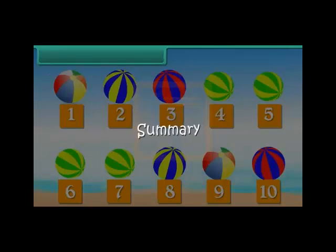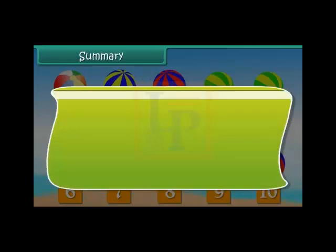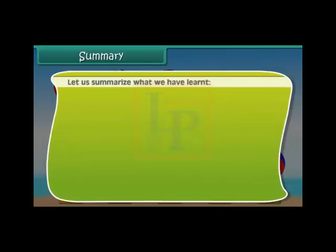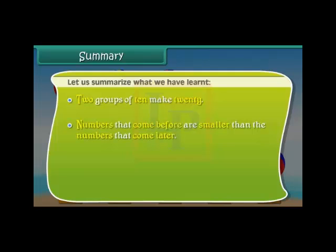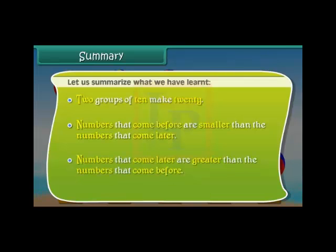Summary. Let us summarize what we have learned. Two groups of 10 make 20. Numbers that come before are smaller than the numbers that come later. Numbers that come later are greater than the numbers that come before.